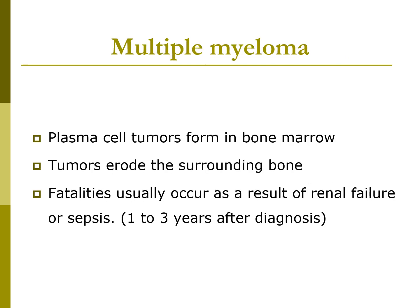Multiple myeloma, also known as plasma cell myeloma, is when plasma cell tumors form in the bone marrow, replacing normal marrow cells. Normal bone marrow has less than 1% plasma cells, but in multiple myeloma patients can have up to 90%. Their tumors start to erode surrounding tissue. Fatalities usually occur from renal failure or sepsis, one to three years after diagnosis. The cause is unknown — possibly viral or radiation exposure. Rouleau formation is seen on RBC differential.